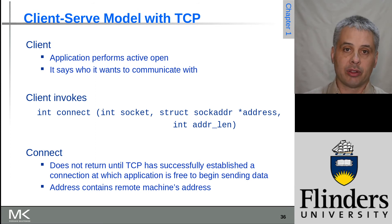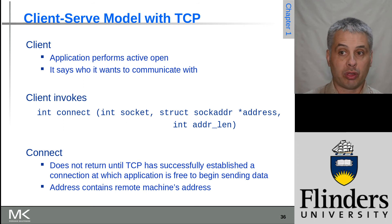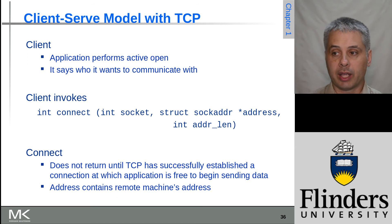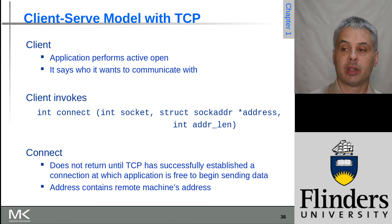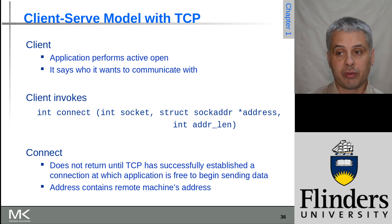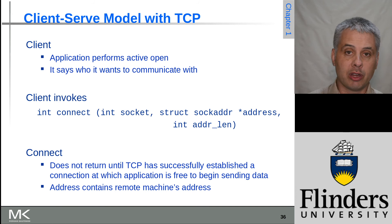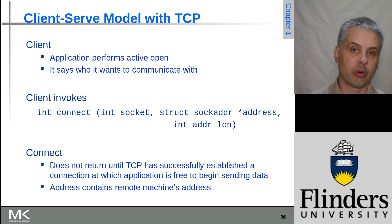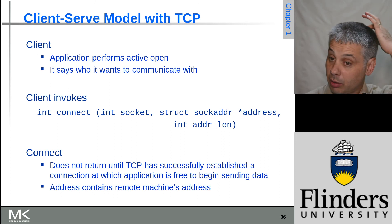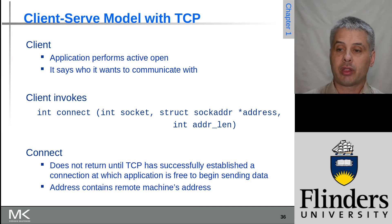On the client side you still call socket to create the socket, but instead of bind, listen, and accept, you simply call connect. You tell it where you want to connect to — the address structure passed in contains the destination TCP or UDP port number and the IP address. Whether it's IPv4 or IPv6 is specified when you do the socket create, and the length of the address is also passed in.